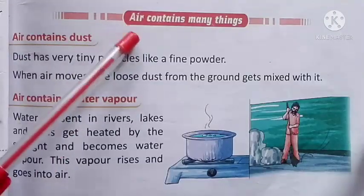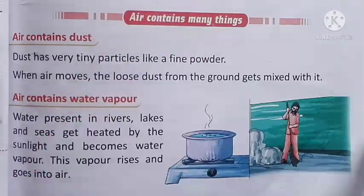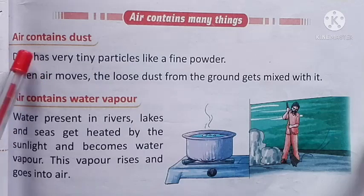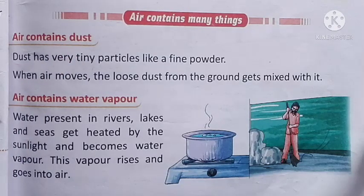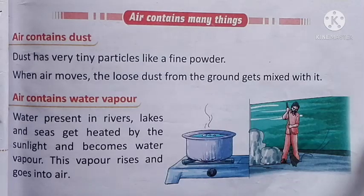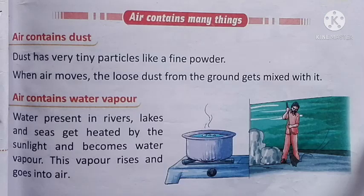Air contains many things. हवा में कई चीजें होती हैं। पहला है — Air contains dust, यानि हवा में धूल होती है। अगर रोशनदान से सूरज की किरणें किसी कमरे में आती हों, तो आप देखेंगे उस सूरज की किरणों के सामने कुछ उड़ते हुए — वह धूल है।